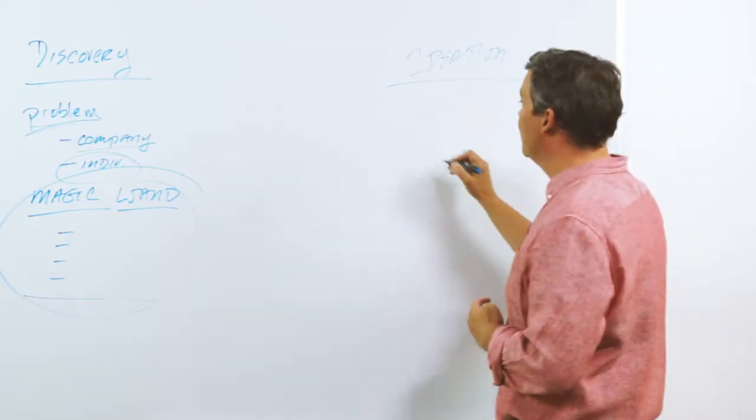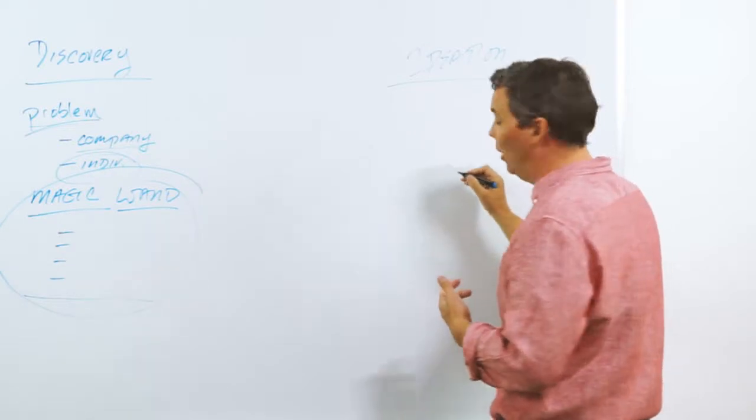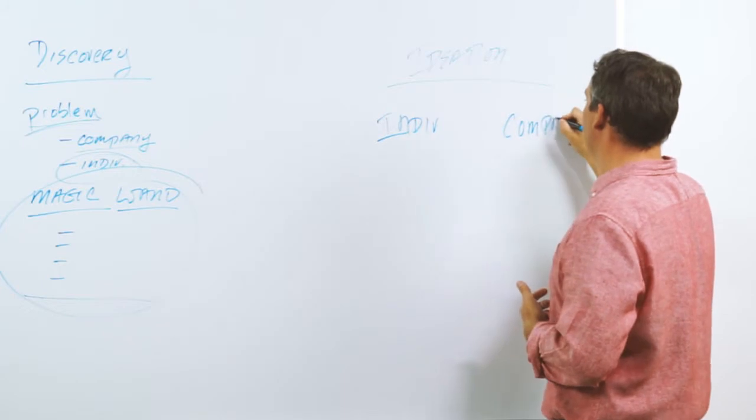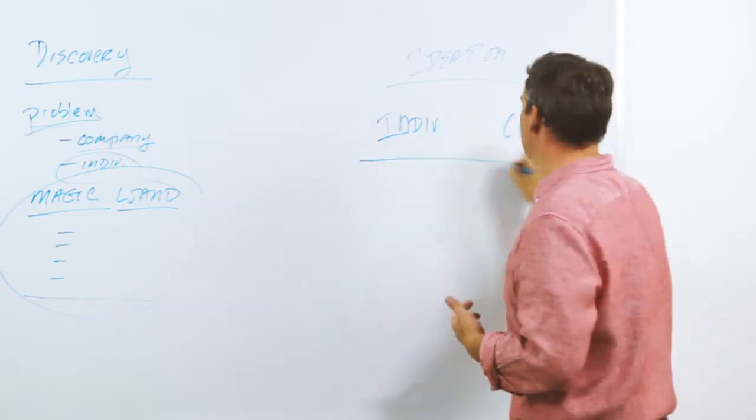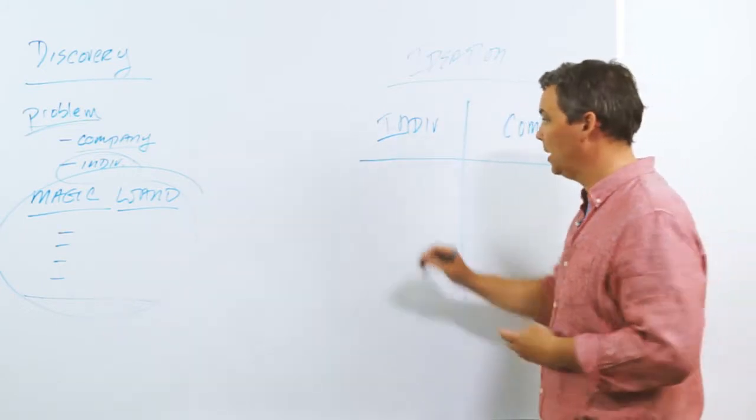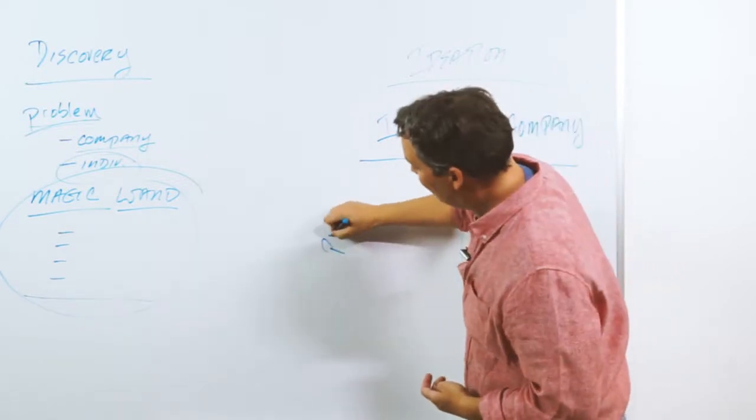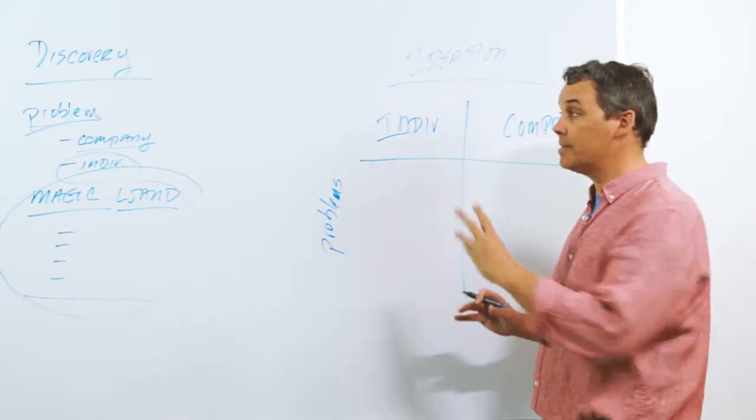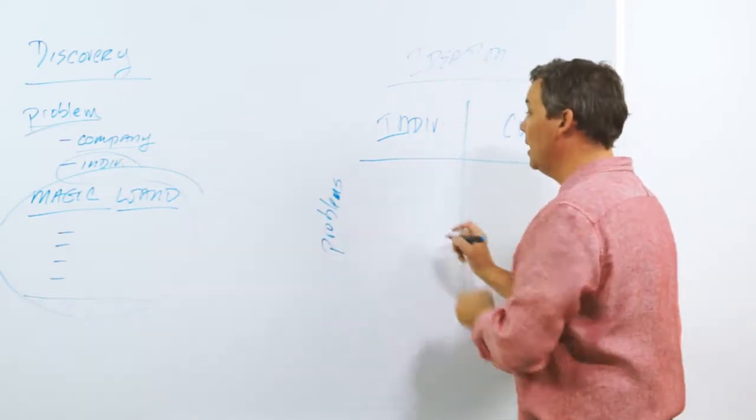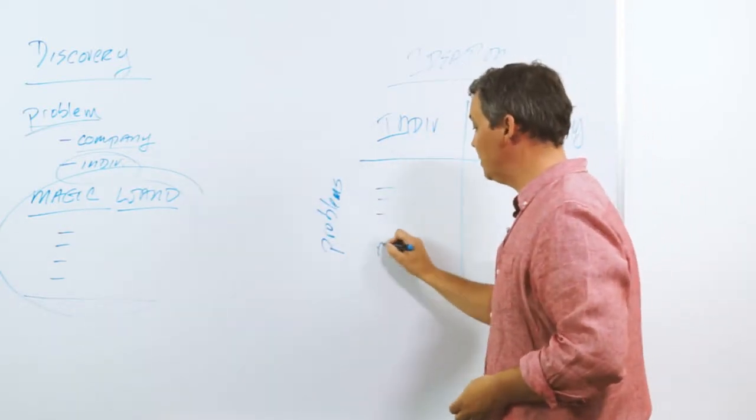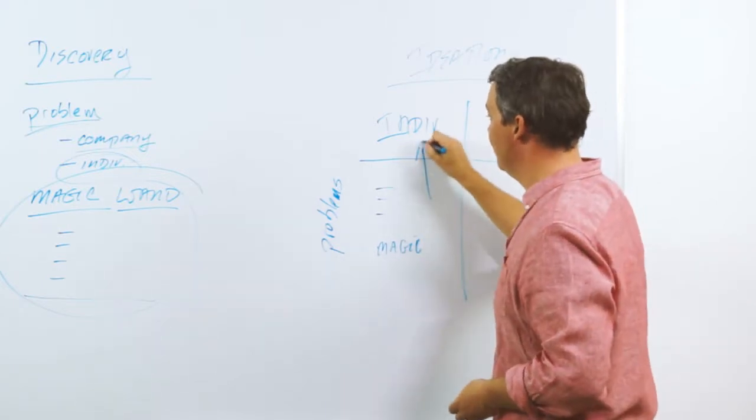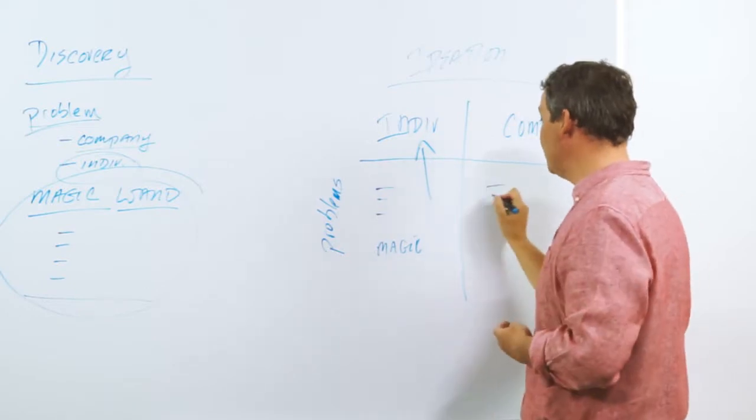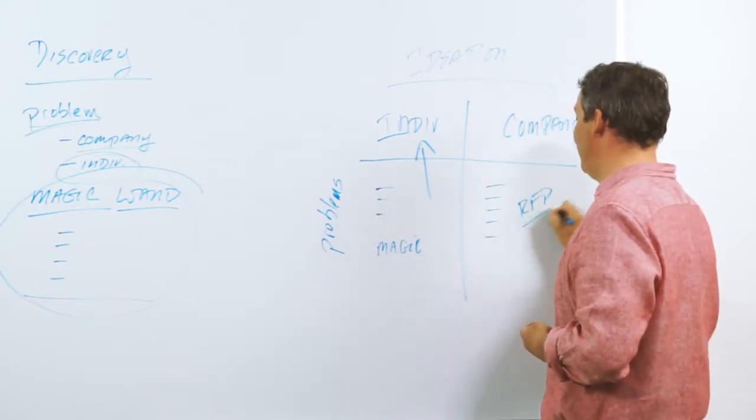So with ideation, what I like to do is kind of create a matrix, if you will. I like to think about an individual and the company like we just spoke about. And I create a matrix. The first part of the matrix are the problems. And what I do is I start to document what we just said over on the discovery board. Here are their problems. Here's their magic wand for the person. Again, I want to know what this does for the individual and the team. And then I do the same thing for the company. This is usually what's in the RFP.